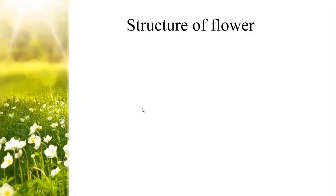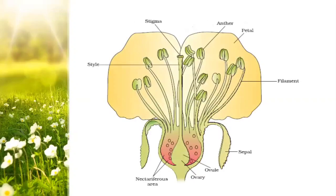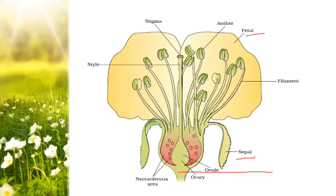This is drawn as a neat labeled diagram of the L.S. of a typical angiosperm flower. It consists of a stalk structure. The base region is called the thalamus. There are four whorls of the flower. The outermost whorl is the calyx, which consists of individuals called sepals. The bright coloured part of the flower is the corolla, consisting of petals. The calyx and corolla are non-essential parts.